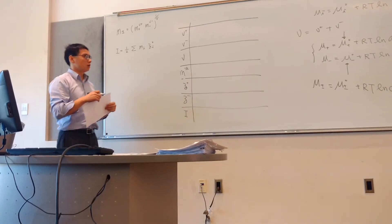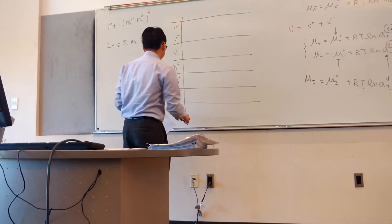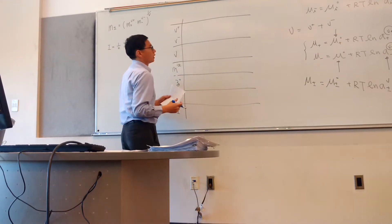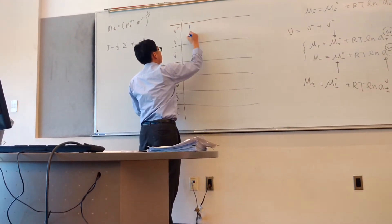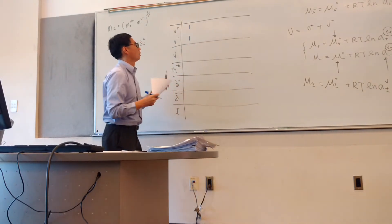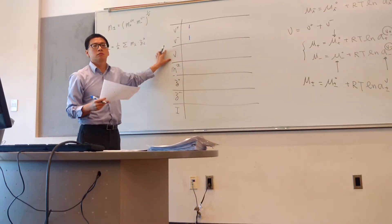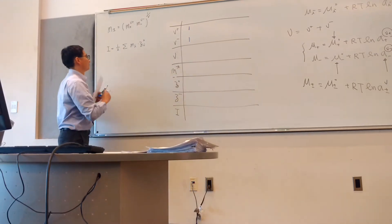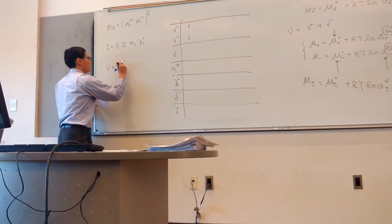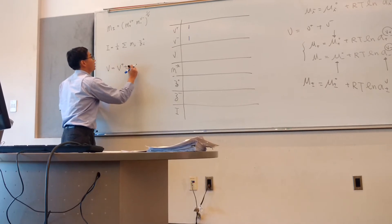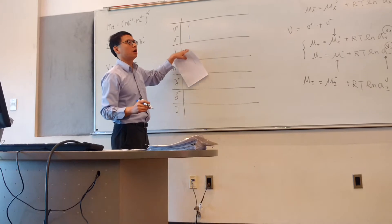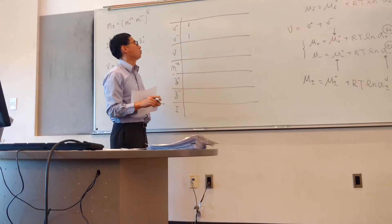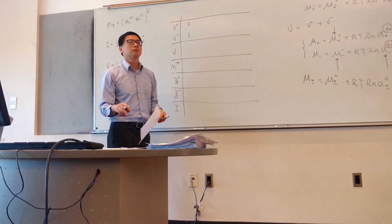Assuming today you have a sodium chloride case, your ν+ equals 1 and ν− equals 1. What is your ν? The definition of ν is going to equal ν+ plus ν−, so your ν is 2.